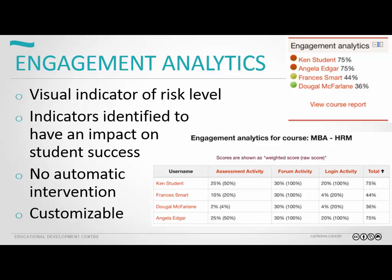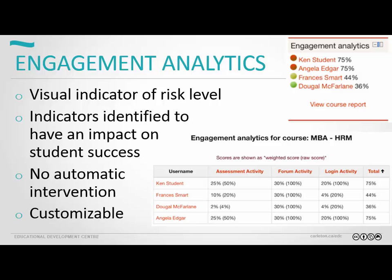The next thing down is something called engagement analytics. It's an extra block you add to your course — only you see it, students do not. It's strictly an indicator for you to see a snapshot of whether there are students that are potentially at risk. How at-risk is defined includes assessment data, forum activity, and login activity, and this is customizable depending on your specific course. There's no automatic intervention, so you actually have to go and look at this data and choose to do something. There are other institutions where they show this to the student — at Purdue, there's something called Signals, which tells a student whether they're red, yellow, or green lighted every time they log into a course.